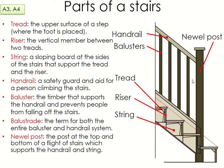The balustrade is the term for both the entire baluster and the handrail system together. People around here wouldn't usually use that word, but in an exam it basically means the balusters plus the handrail — that whole unit. In certain countries they might construct a balustrade before taking the stairs into a house and then just put it onto the stairs. The newel post is the big post at the top and bottom of the stairs — people sometimes hang their coats on it. It supports the handrail and the string, with the string and handrail both jointed into the newel post at the top and bottom.